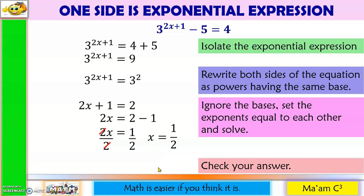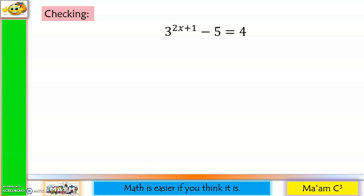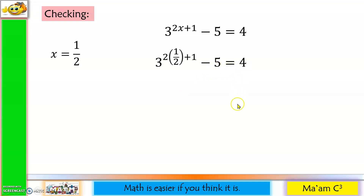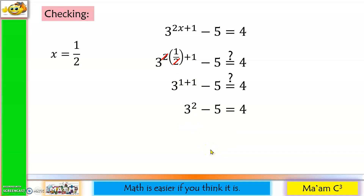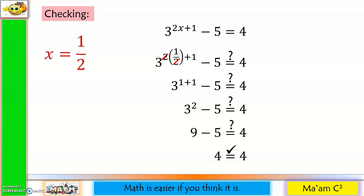Last step: check your answer. Let's have our original equation and recall our answer, x is equal to 1 half. Substitute 1 half for x. So we have 3 raised to 2 times 1 half plus 1 minus 5 is equal to 4. The 2s cancel out, leaving us with 3 raised to 1 plus 1 minus 5 equals 4. 1 plus 1 is 2, so 3 squared minus 5 equals 4. 3 squared is 9, so 9 minus 5 equals 4. 9 minus 5 is 4 equals 4. Yes, they are equal. Therefore, our answer x equals 1 half is correct.